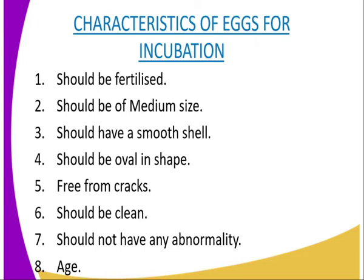Number six, they are supposed to be clean, because that will encourage free circulation of air inside and outside during chick development. Number seven, they should not have any abnormality — for example, they are not supposed to be double-yolked, because eggs which are double-yolked cannot hatch into a chick.